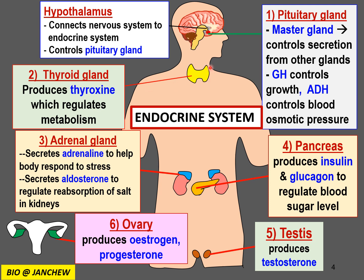The thyroid gland, situated in the neck region, produces thyroxine, which is very important to regulate metabolism and the rate of respiration. The adrenal gland secretes two hormones: adrenaline, which helps the body respond to stress or emergency situations by stimulating the heart to beat faster and pumping more blood to the tissues. The adrenal gland also secretes aldosterone, which regulates the reabsorption of salt in the kidneys. ADH from the pituitary gland regulates water reabsorption, while aldosterone regulates salt reabsorption.